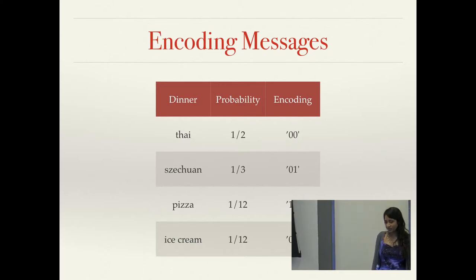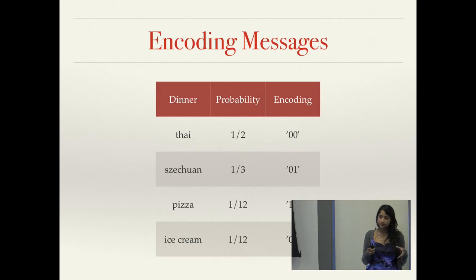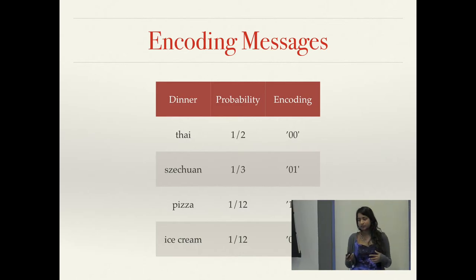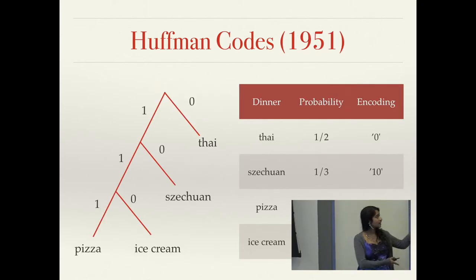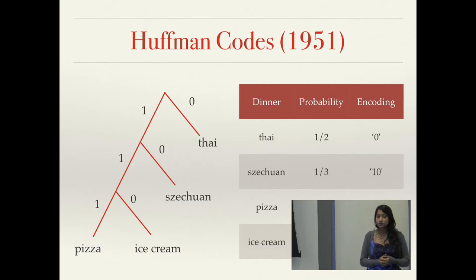The classic way to encode this information is to use two bits — you have four choices, one symbol for each. This is a fixed-length encoding. But I can express my choices more succinctly by using shorter bit sequences for more probable choices and longer sequences for less probable choices — similar to Morse code using a dot to represent 'e'. Since pizza and ice cream happen much less frequently, I can use longer sequences to represent them without losing efficiency. This is called a Huffman code — a specific variable-length code proposed in a term paper for a grad class taught by one of Shannon's colleagues a few years after this paper was published.